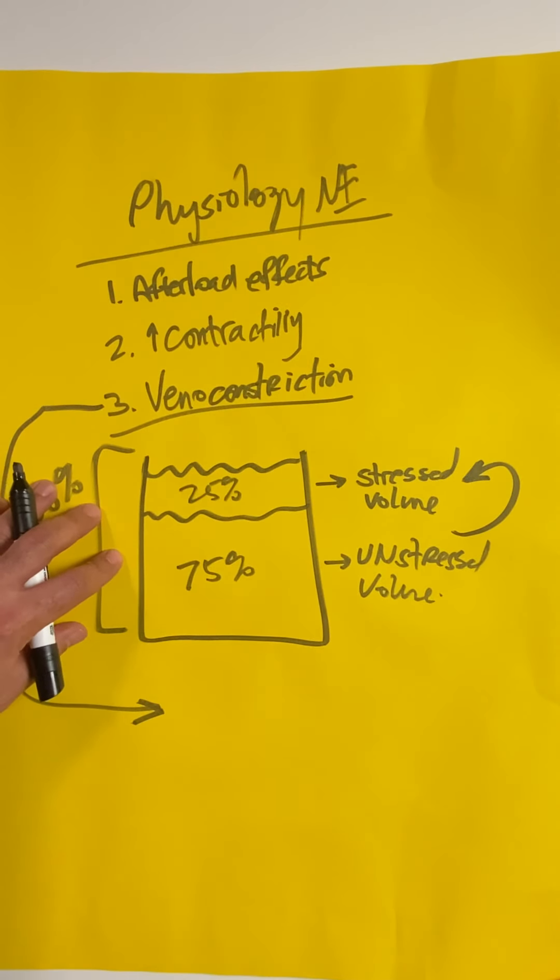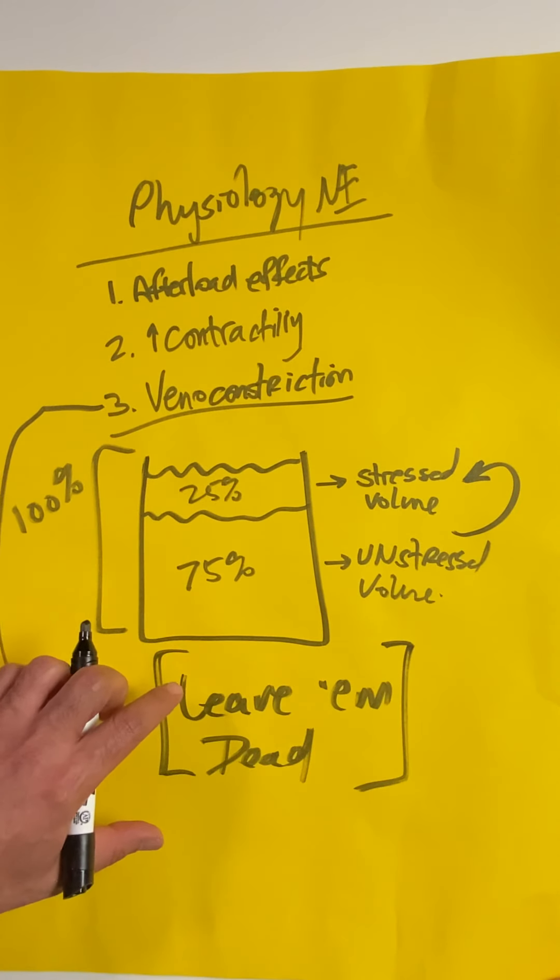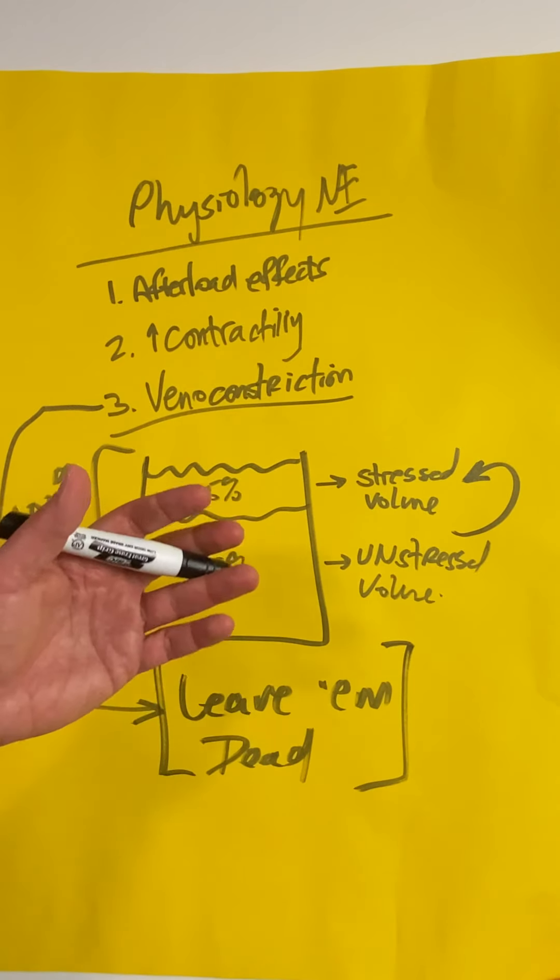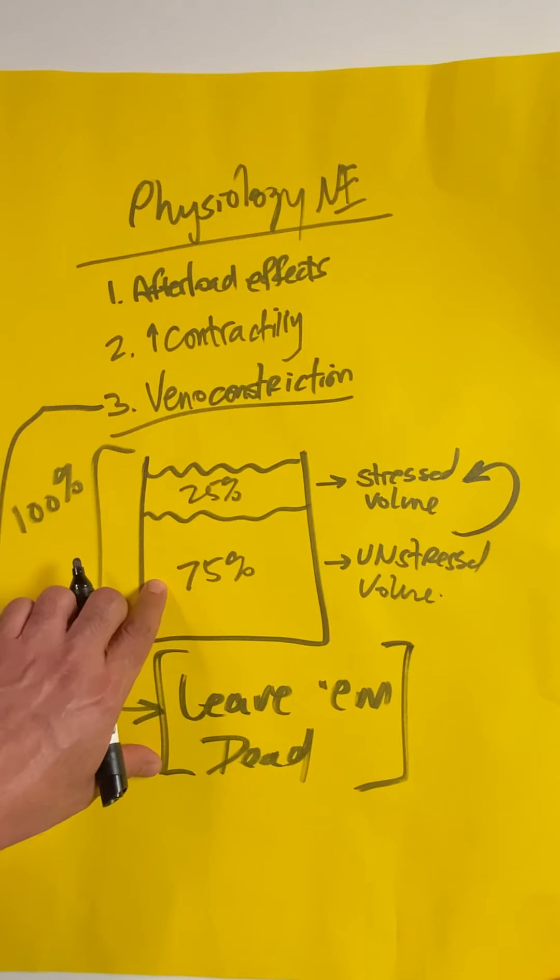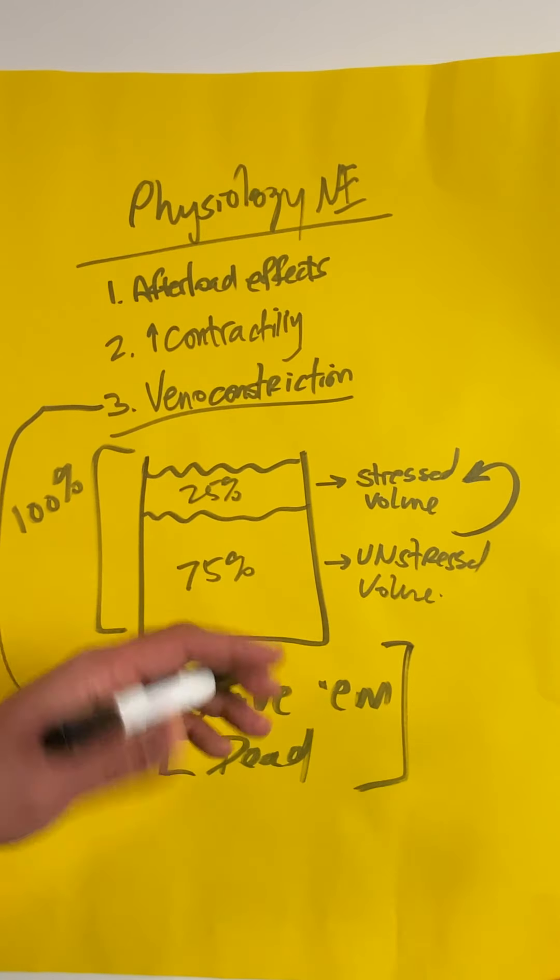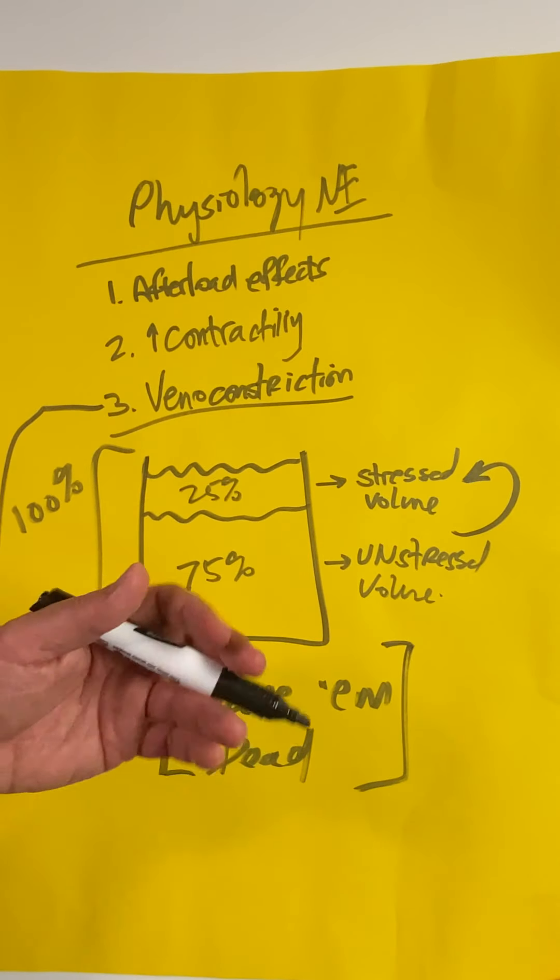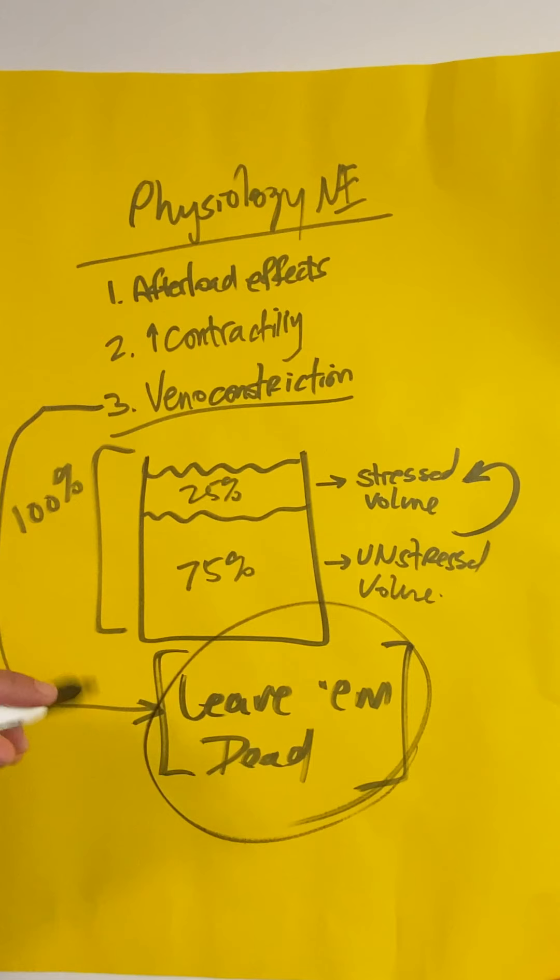Some of you might be listening and say, 'Wait a minute, isn't Levophed what they call leave 'em dead?' People used to say this about norepinephrine because people weren't doing good resuscitation for their patients. They weren't giving good volumes or early antibiotics. What would happen is you would crank up the Levophed just to keep patients alive, and people would have end-organ injury—mesenteric ischemia, necrotic fingers, coronary ischemia. That's where this term 'leave 'em dead' came from.